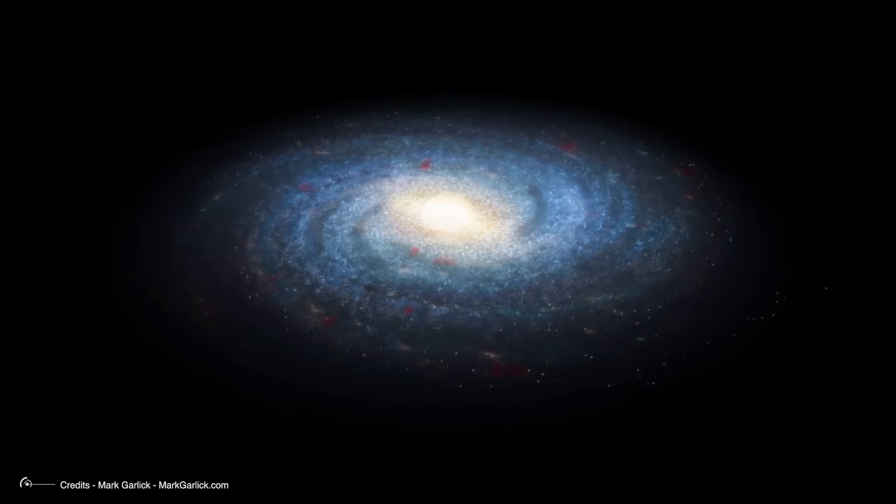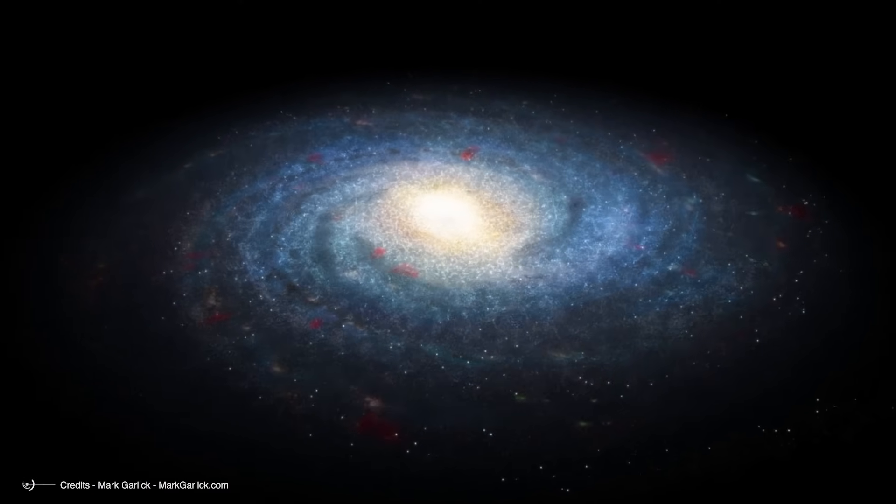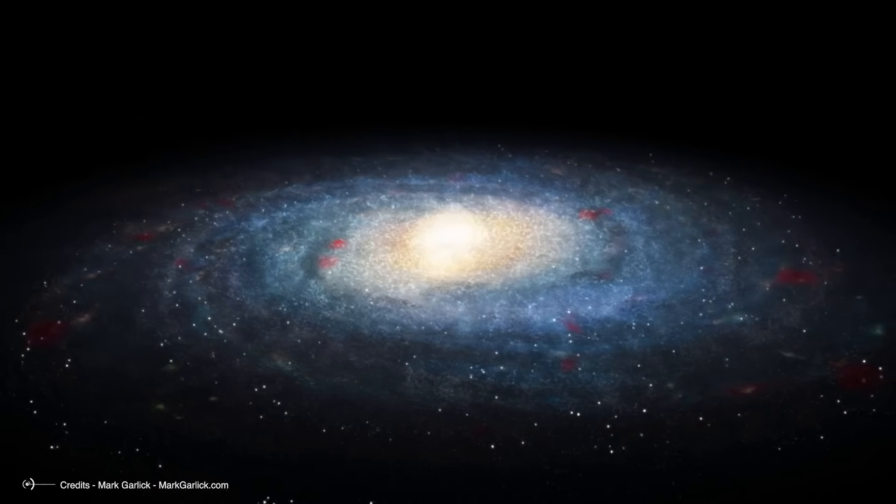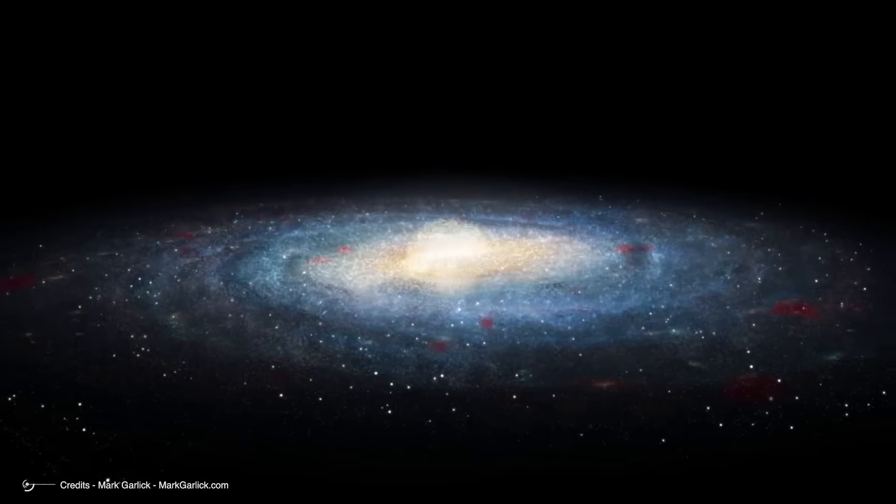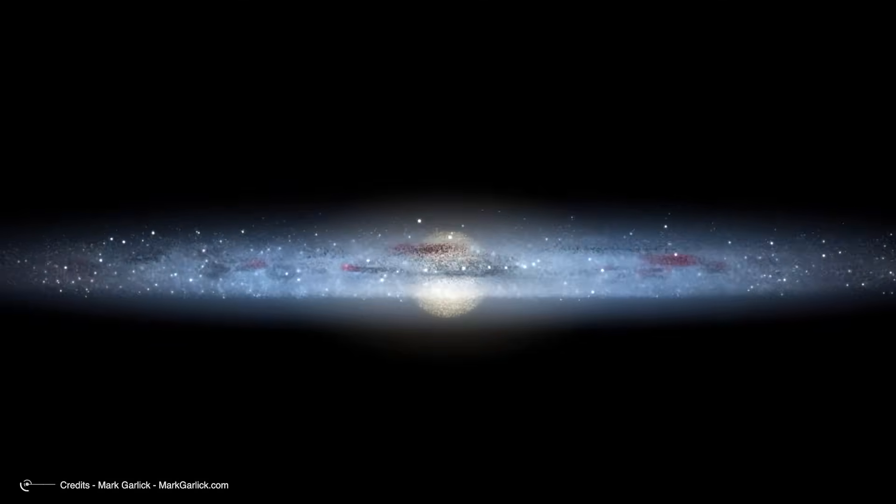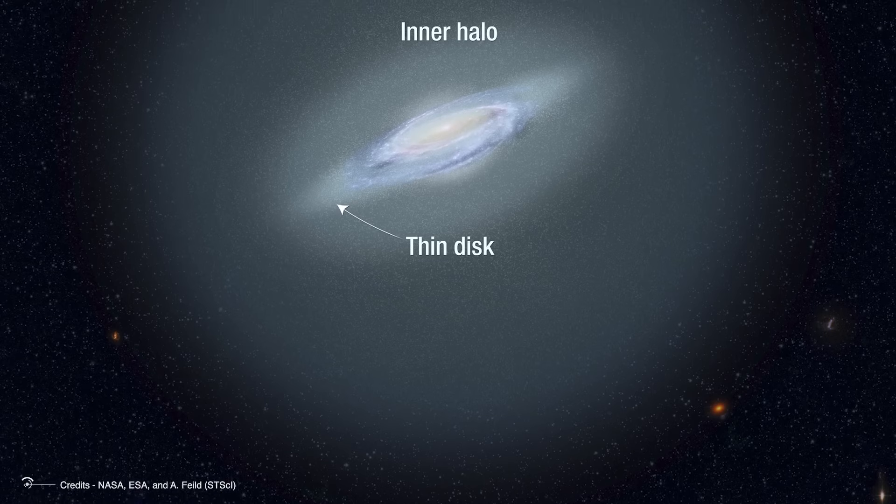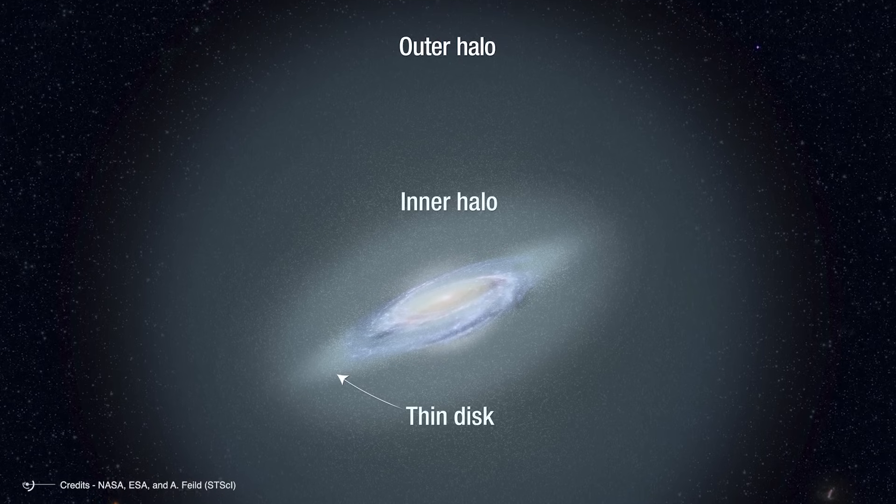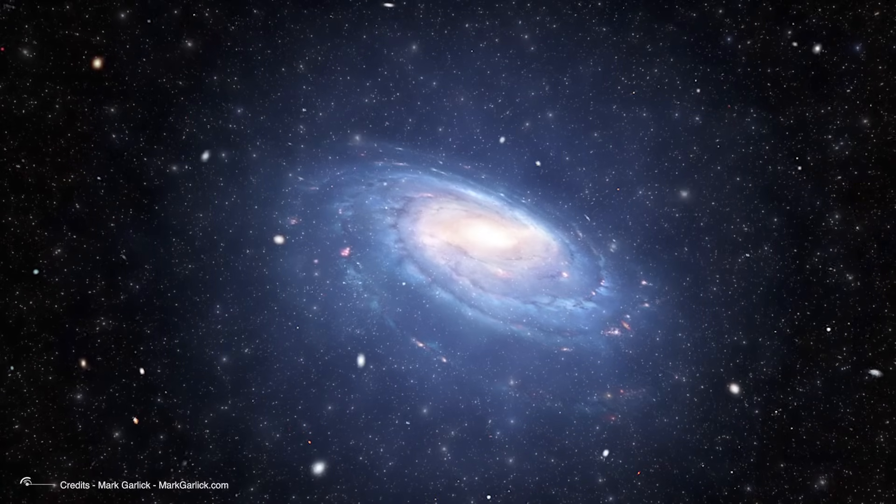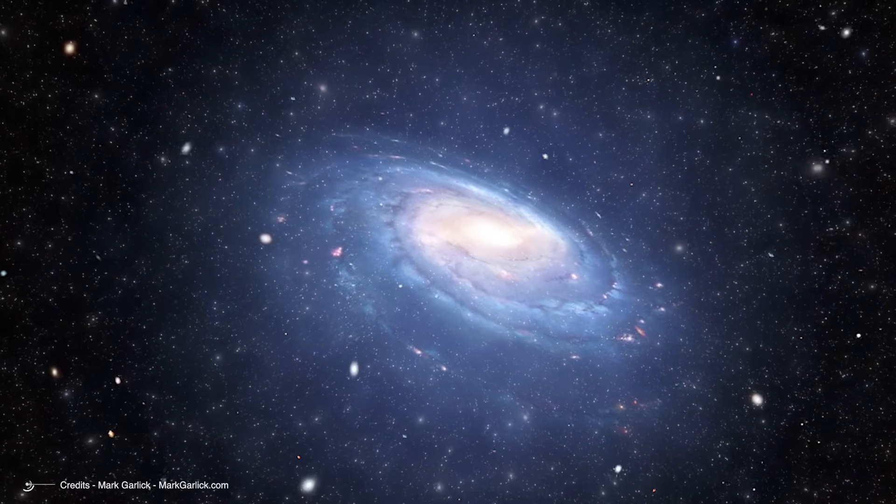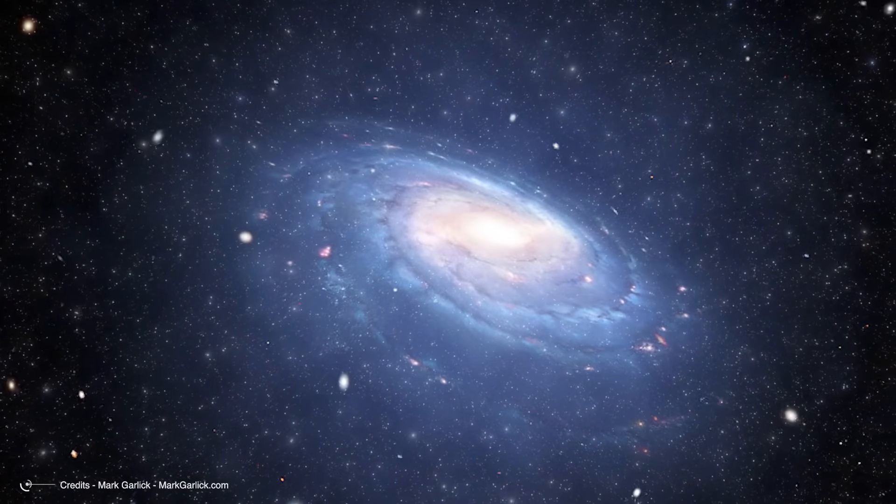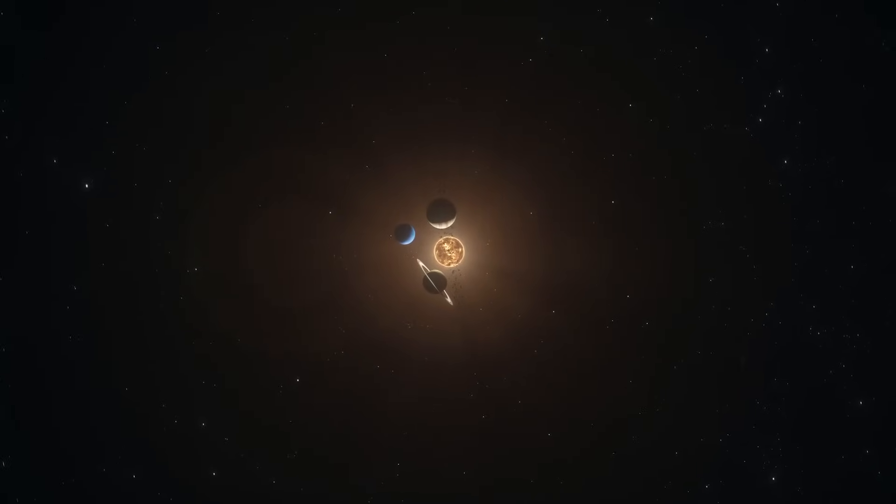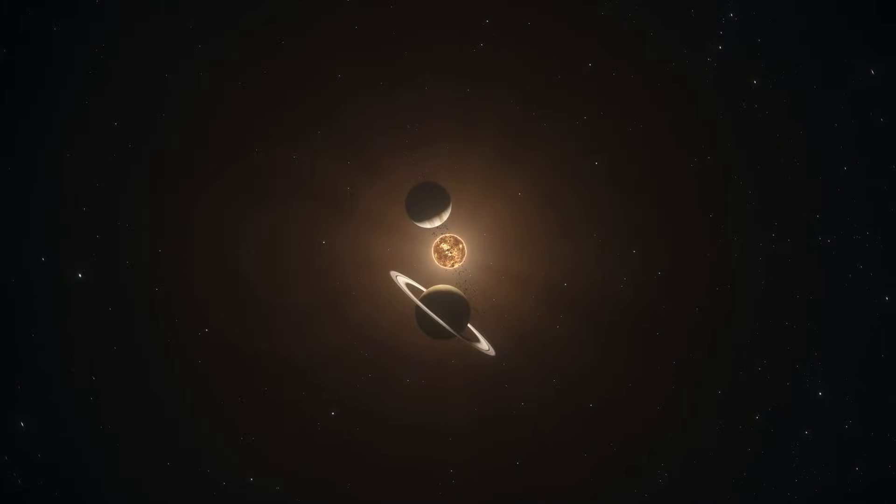Perhaps most revealing is how mainstream astronomy discusses the Milky Way itself. Our galaxy isn't a perfect flat disk either, but rather a complex three-dimensional structure with a central bulge, spiral arms, and a warped disk. Beyond this lies the galactic halo, a vast spherical region extending far beyond and below the galactic plane. This means the very galaxy we call home exhibits the same three-dimensional complexity that's deliberately downplayed when discussing our solar system. The pattern of simplification persists at every scale.